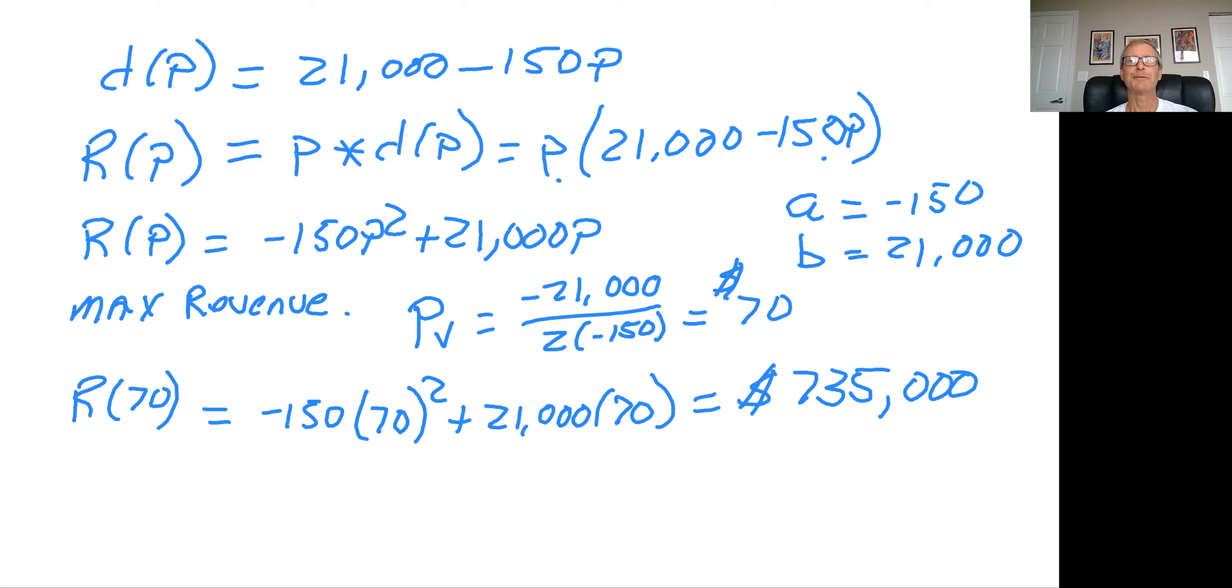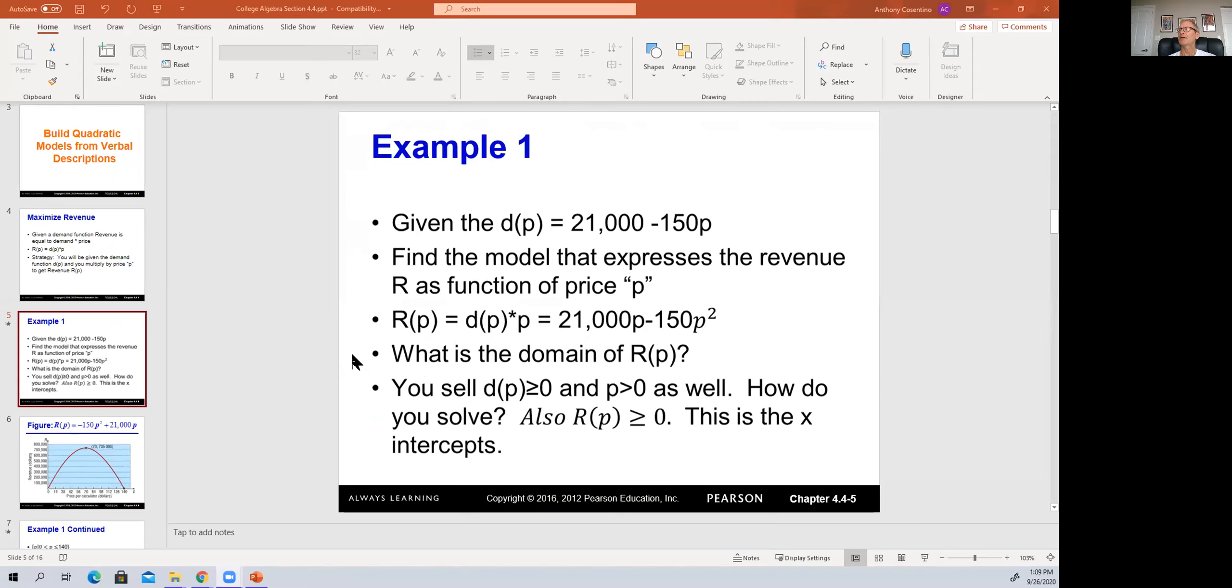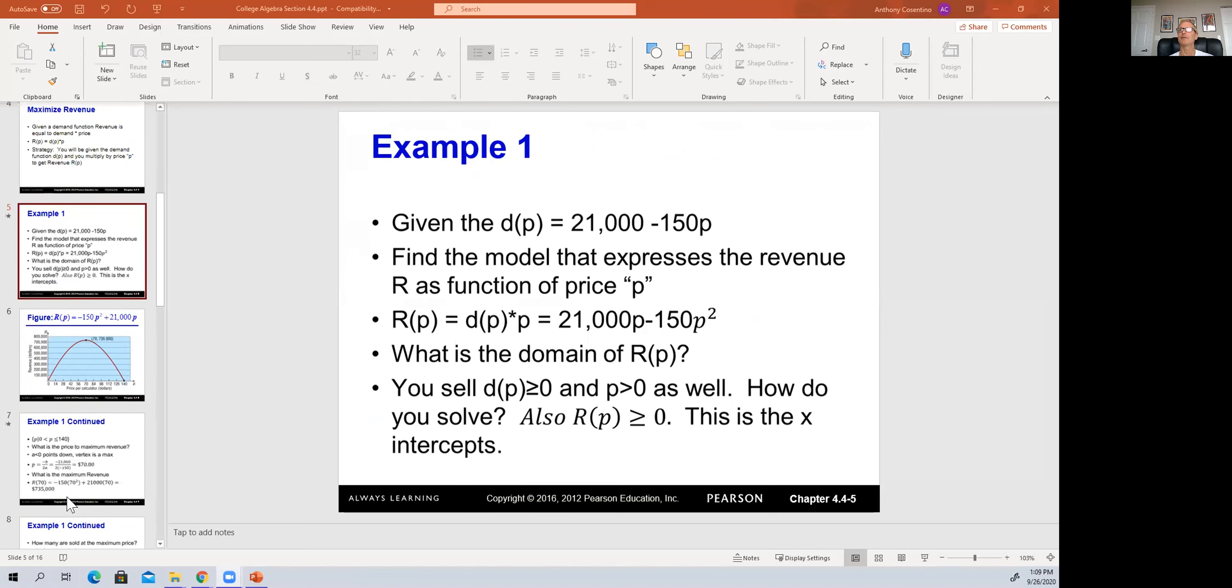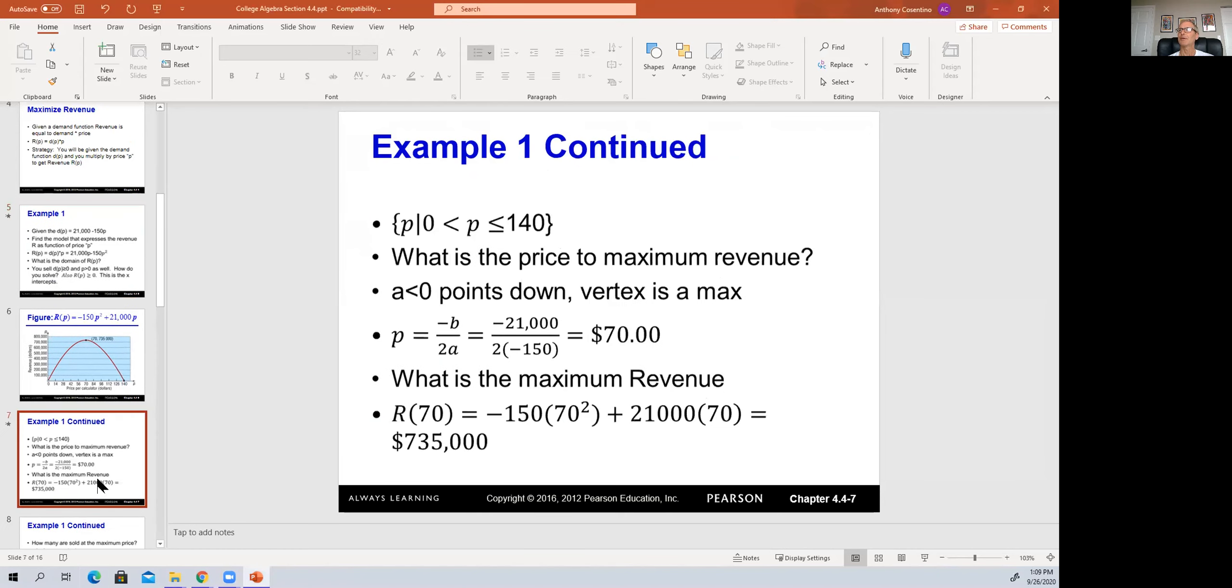So that talks about maximizing the revenue. And so that was this calculation here, where what is the price to maximize revenue? Since the a value points down, you get $70. And then the maximum revenue of plugging it in, you end up with $735,000.